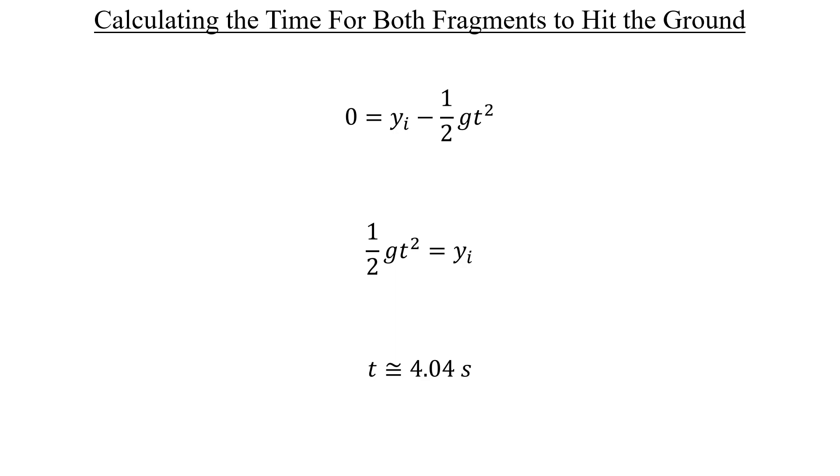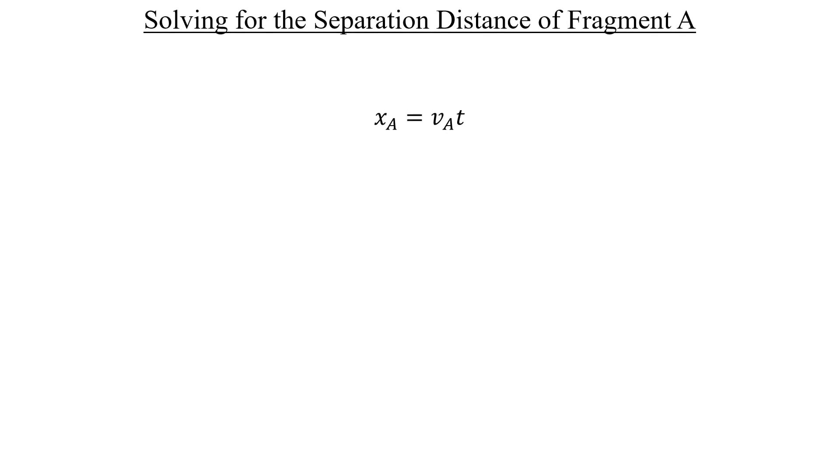Let's take this time and use it to figure out how far the individual fragments move first, beginning with A. All we need to do is multiply the velocity that we solved for by the time that we just got, and we get a distance of 57.8 meters, specifically for chunk A.